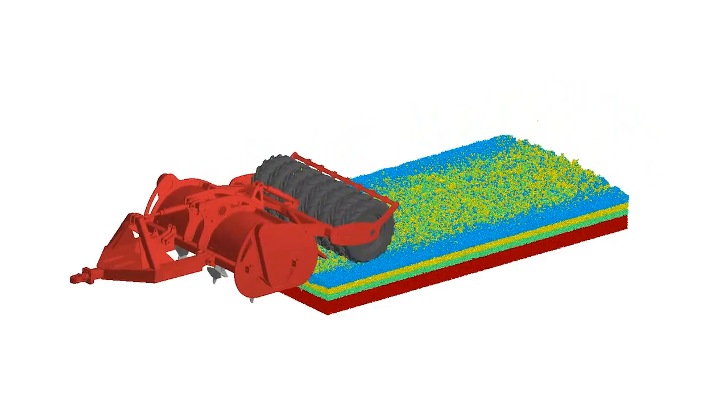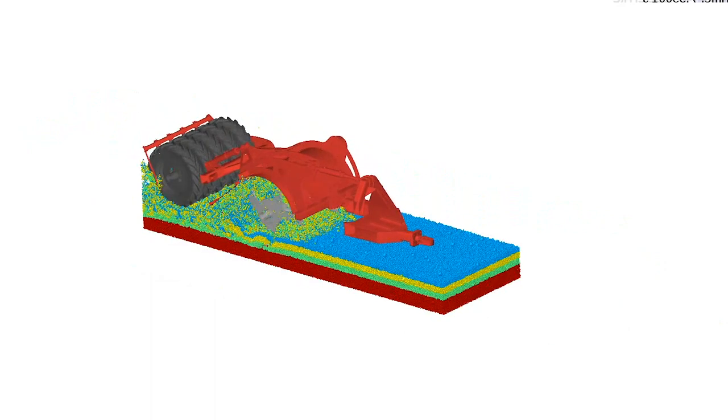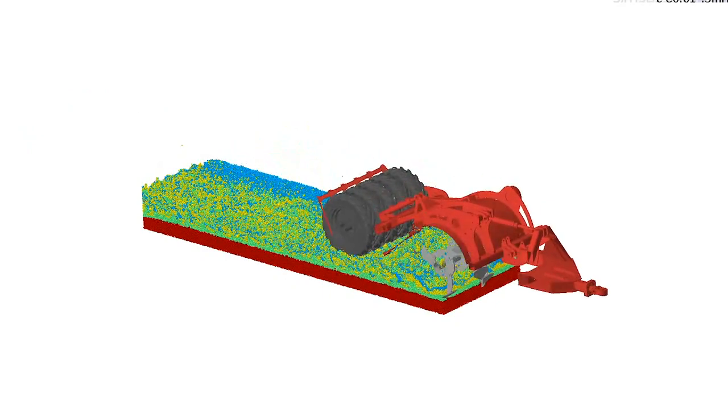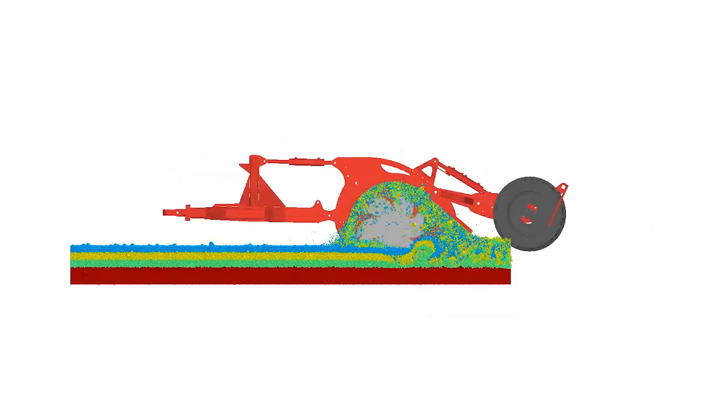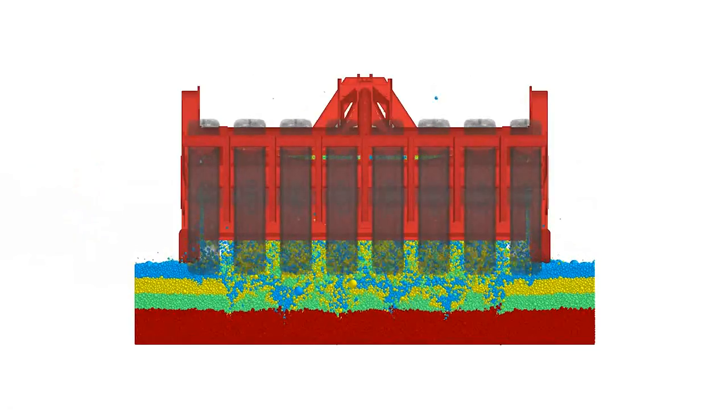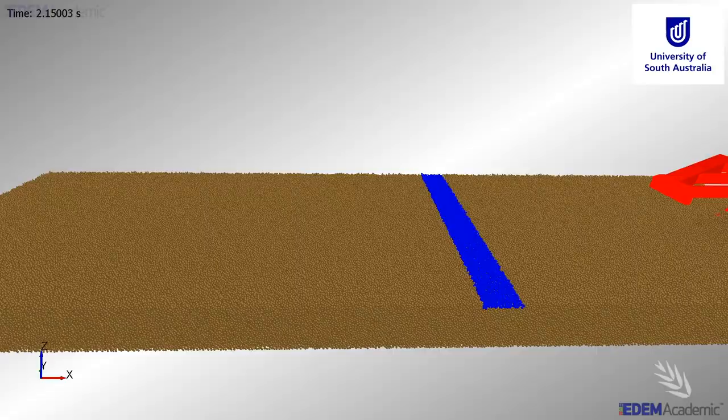There's computer modelling software known as DEM which is extremely useful for understanding the interaction between soil particles and machinery. Yet worldwide, there are only a few groups using it for tillage research.